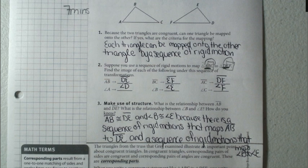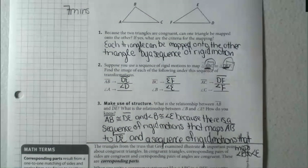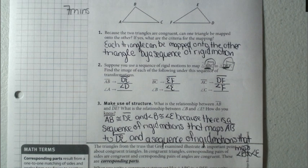What is the relationship between AB and DE? Well, I know that AB is congruent to DE. And I know that angle B is congruent to angle E because there is a sequence of rigid motions that maps AB to DE and a sequence of rigid motions that maps angle B to angle E.